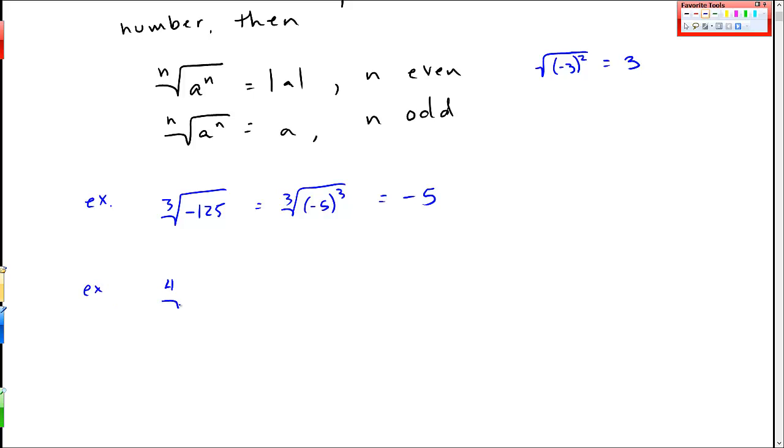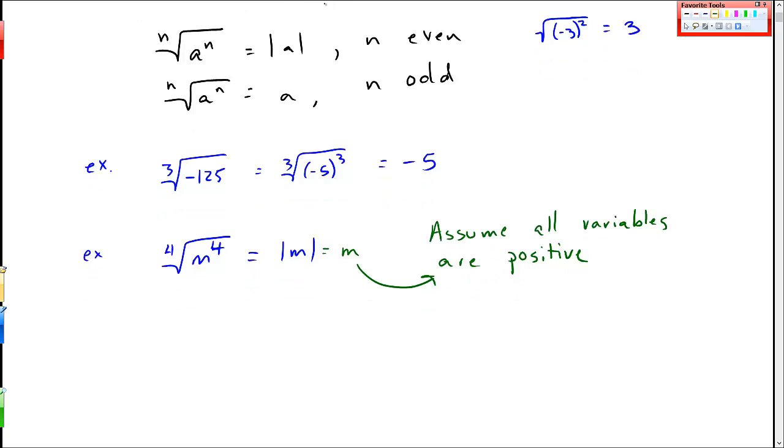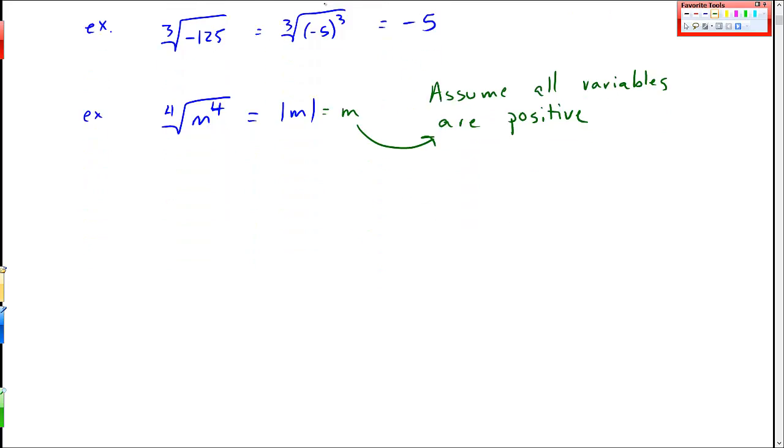But when I have the fourth root of m to the fourth power, and I don't know anything about m, then this is the absolute value of m, whatever it is. Sometimes, and you have to watch the language in the instructions, they'll have this note where it'll say assume all variables are positive. And when it says that, then this absolute value, if m is a positive number, the absolute value of m is just m.